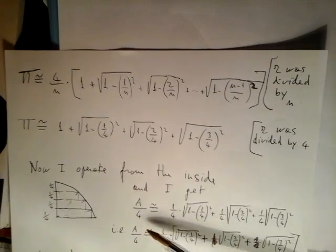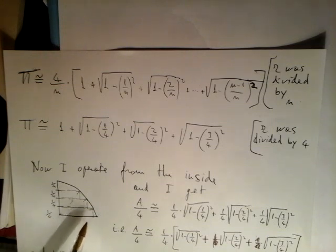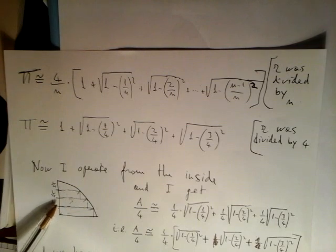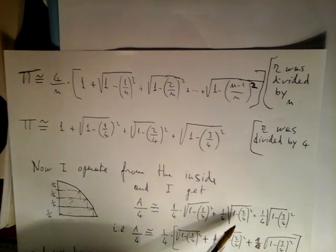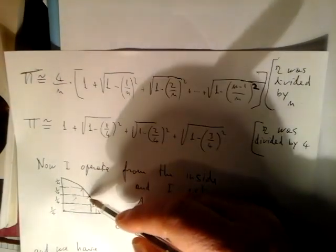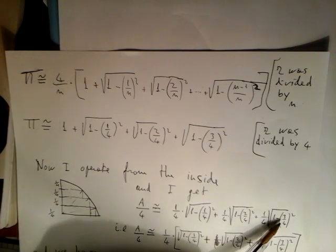A fourth equals to this area here: one fourth of square root of 1 minus 1 quarter squared, by Pythagoras. The area of this other rectangle is 1 quarter times square root of 1 minus 2 fourths squared — 2 fourths meaning this length here. And in the same way, I obtained the area of this third rectangle, which is 1 fourth times square root of 1 minus 3 fourths squared.